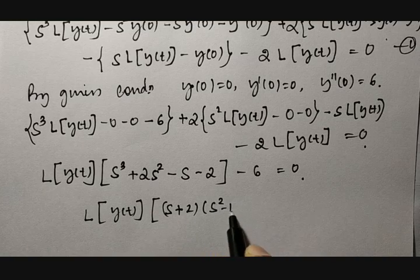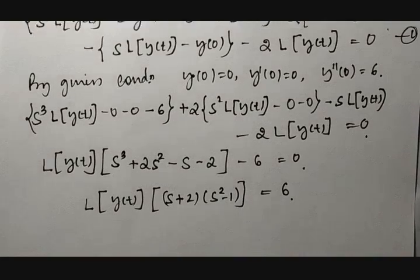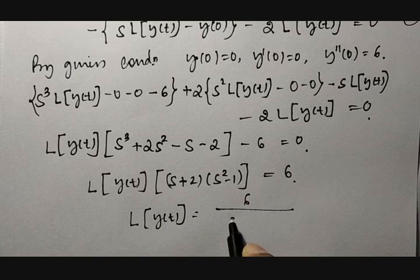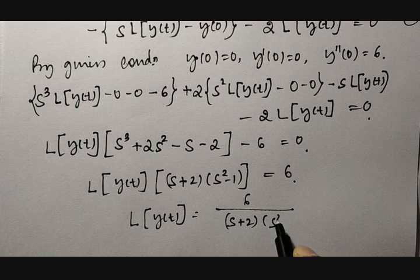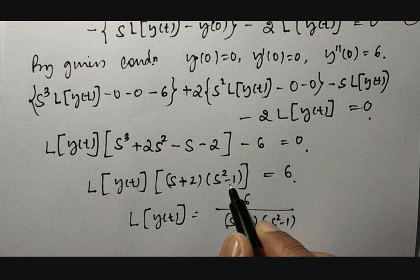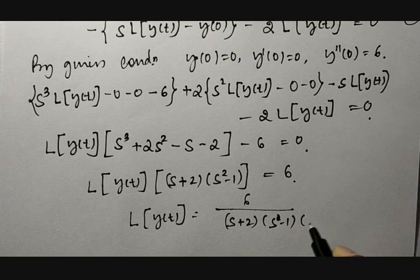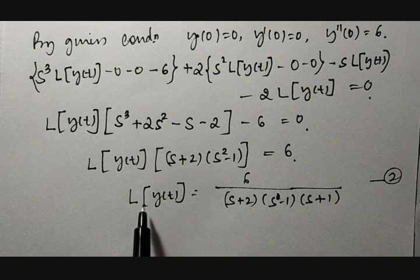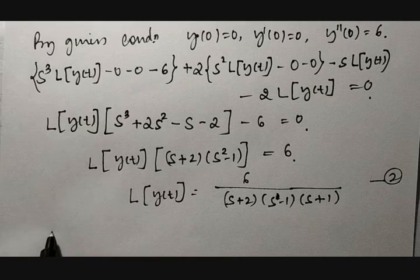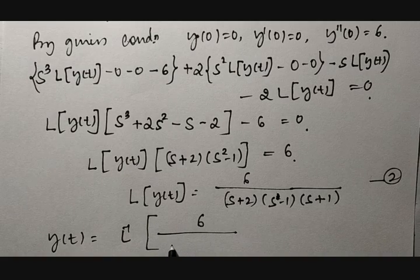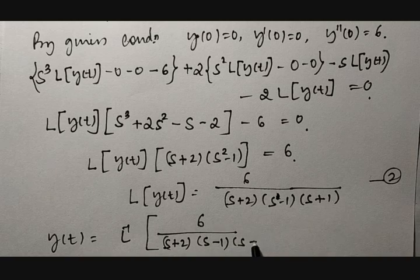Therefore, L{y(t)} is equal to 6 divided by (s plus 2) times (s squared minus 1). Since s squared minus 1 is a difference of squares, it factors as (s minus 1)(s plus 1). So L{y(t)} equals 6 divided by (s plus 2)(s minus 1)(s plus 1), which we call equation 2. Then y(t) equals the inverse Laplace of 6 divided by (s plus 2)(s minus 1)(s plus 1).